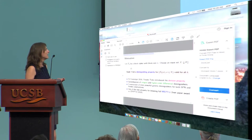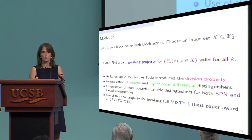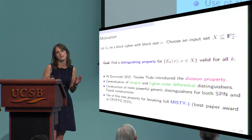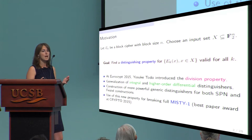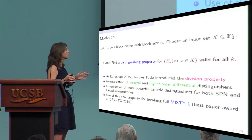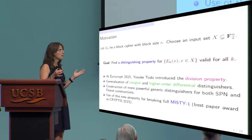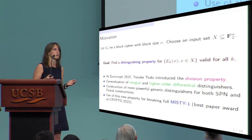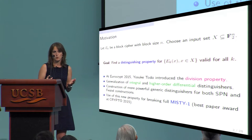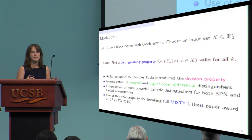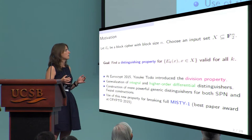When an attacker wants to break a cipher, the first thing they will try to do is to find a distinguishing property that should hold for every value of the secret key. Once this distinguishing property is found, they can probably try to mount a key recovery attack. Last year Yusuke Todo introduced the division property, which can be seen as a generalization of integral and higher-order differential distinguishers.